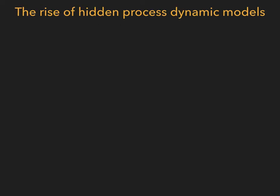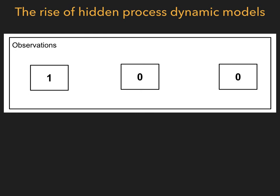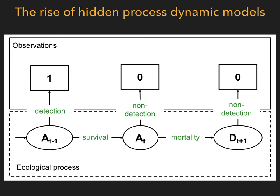Once you have the data, the next question is how to analyze them. There has been a rise of dynamic models — models for time series data that explicitly acknowledge the existence of hidden processes. In capture-recapture data, we have a series of zeros and ones: one if an animal is detected, zero if not. However, what we are actually interested in is whether the individual is alive or dead. The hidden process here is that of survival — it's only partially observed. When you do not detect an individual, the question is whether it's alive or dead. The time series of alive-and-dead states is driven by the survival probabilities, and from those states you get detections or non-detections with some probabilities.